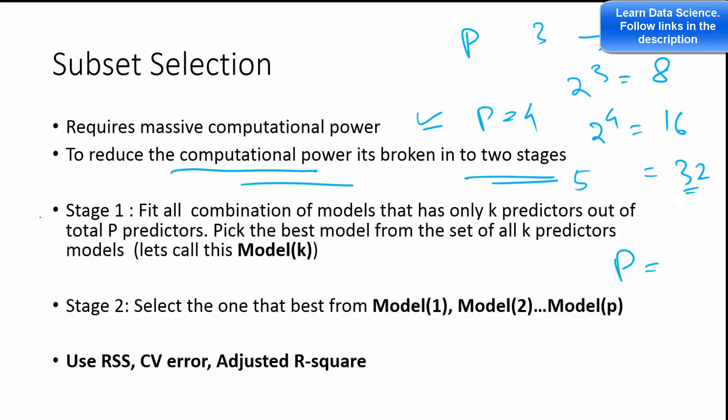And not always you have availability of massive computational power. So to reduce the computational power, the algorithm is broken into two stages. In the first stage, fit all combinations of models that have only k predictors out of total p predictors, and pick the best model from the set of k predictors. Now for each one of these models, let's say you have p equals 4, so there are 4 predictors: X1, X2, X3, and X4. Let's say k equals 1, that means one variable model.